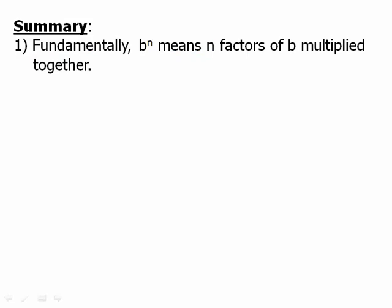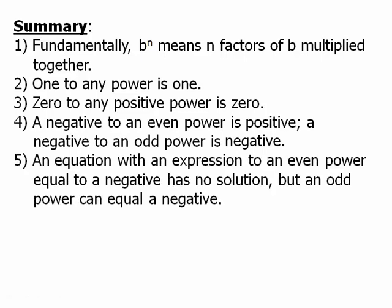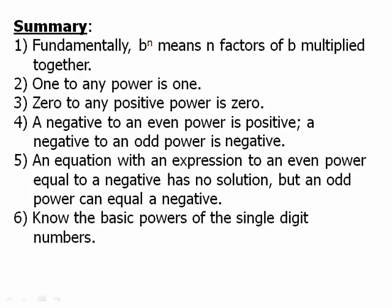Fundamentally, b^n means n factors of b multiplied together. That is the fundamental definition of an exponent. And it's very good as we move through the laws of exponents to keep in mind that fundamental definition. 1 to any power is 1. 0 to any positive power is 0. A negative to an even power is positive. A negative to an odd power is negative. An equation with an expression to an even power equal to a negative has no solution, but an odd power can equal a negative. And finally, know the basic powers of the single-digit numbers.